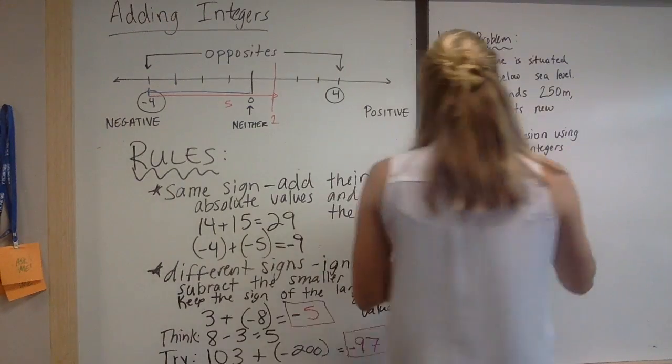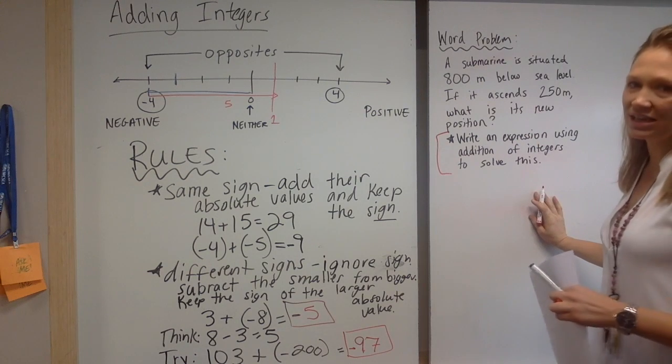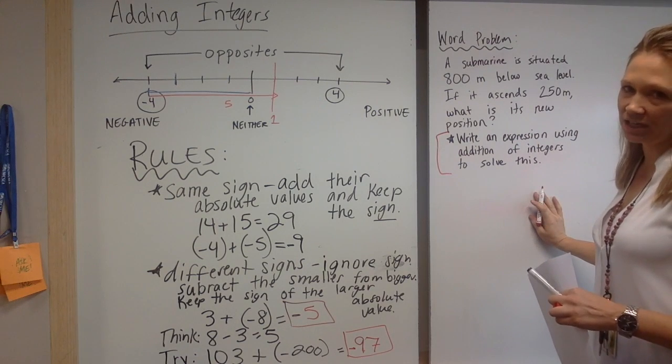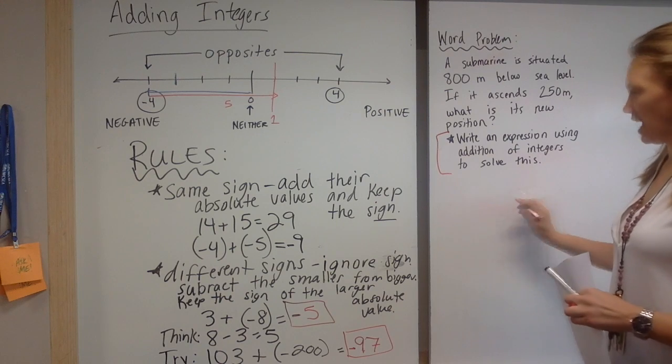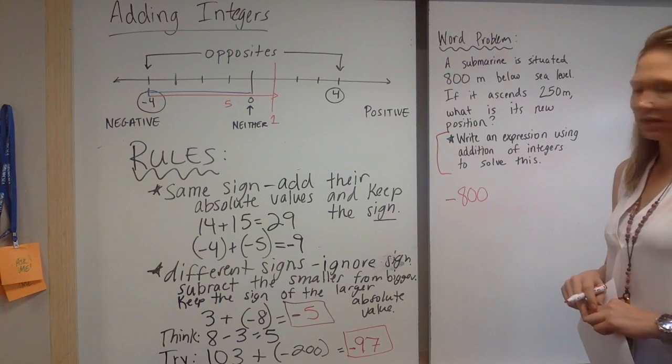So if a submarine is below sea level, do you think we're going to assign a positive or negative quantity to that? Negative. I would agree with you. So we're at negative 800. That's how deep it is.